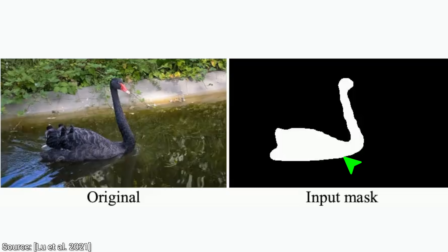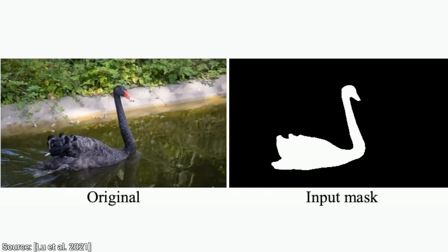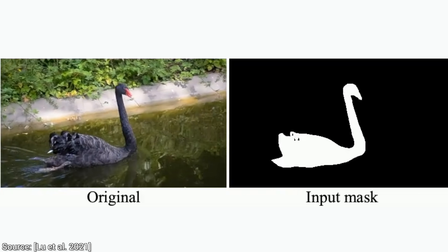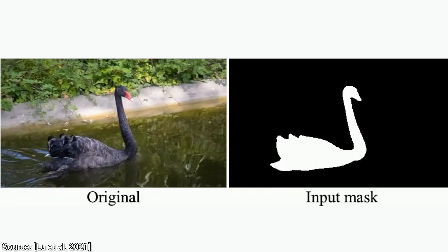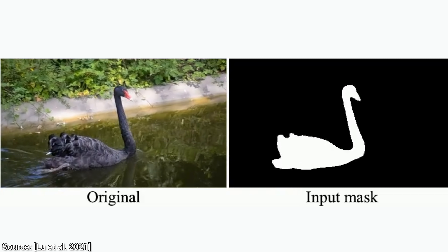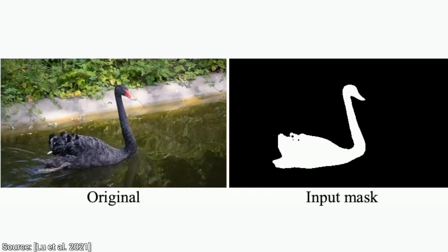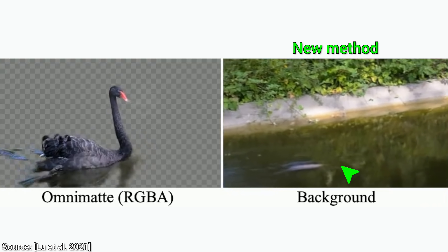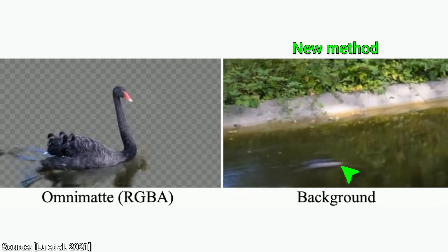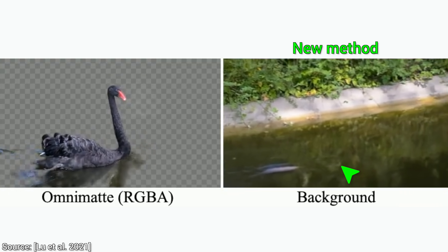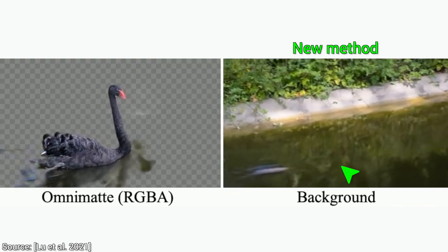Shadows are not the only potential correlated effects. A previous method was able to find the swan here, but it's not enough to remove it, because it also has additional effects on the scene. What are those? Well, it has reflections, and it creates ripples too. This is so much more difficult than just finding shadows. And now, let's see the new method — whoa! It knows about the reflections and ripples, finds both of them, and gives us this beautifully clean result.